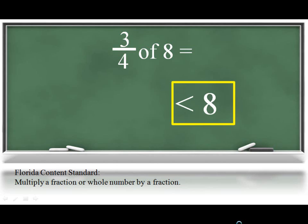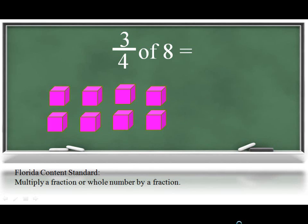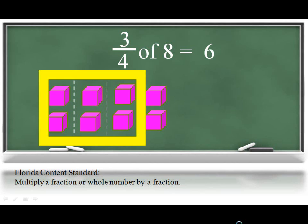To follow through and solve this problem, the students could use manipulatives, such as unit cubes, to show a group of 8. Then split that group into 4ths. And from this model, they should be able to see that 3 fourths of a group of 8 would be 6.